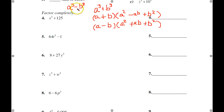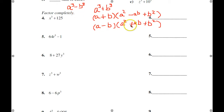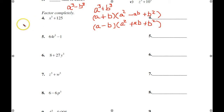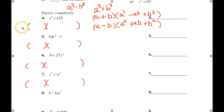Notice for the sum and difference of perfect cubes, the only difference is: for the sum, the plus goes in the binomial and the negative goes in the trinomial middle; for the difference, the negative goes in the binomial and the opposite sign goes in the trinomial. The rule is you set up a parenthesis with two terms. I've set this up ahead of time. Let's work on the signs first.